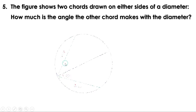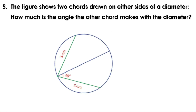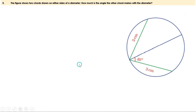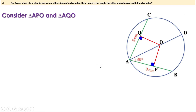Next problem: The figure shows two chords drawn on either side of a diameter. How much is the angle the other chord makes with the diameter? Let O be the center of the circle. Draw perpendiculars from the center to the chords and let them meet the chords at P and Q. Consider triangles APO and AQO. Given that AB and AC are equal, AP is half AB and AQ is half AC. Since AB and AC are equal, their halves are also equal — therefore AP equals AQ.